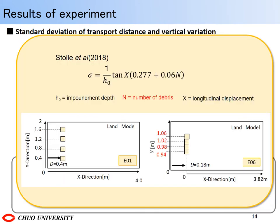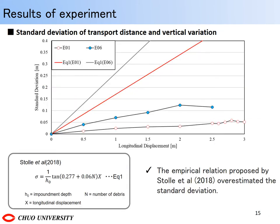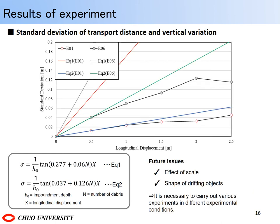This is an evaluation formula for the spread of drifting objects proposed by Stahl et al. The parameters are the depth of inundation, the number of drifting objects, and the distance traveled in the downward direction. To examine the effect of the number of drifting objects, the spread of experimental cases E01 and E06 was evaluated by this formula. As a result, the empirical relation proposed by Stahl et al. overestimated the standard deviation. Therefore, a new evaluation formula was studied using the conditions of this experiment. When the maximum value of the variation was taken using the experiment results, the formula at the lower left was obtained. The problem of this evaluation formula is the effect of experimental scale. It is necessary to consider the adaptability when the shape and the size of the drifting objects are changed, and consider the influence of the similarity law. Therefore, further experiments with different conditions are required.